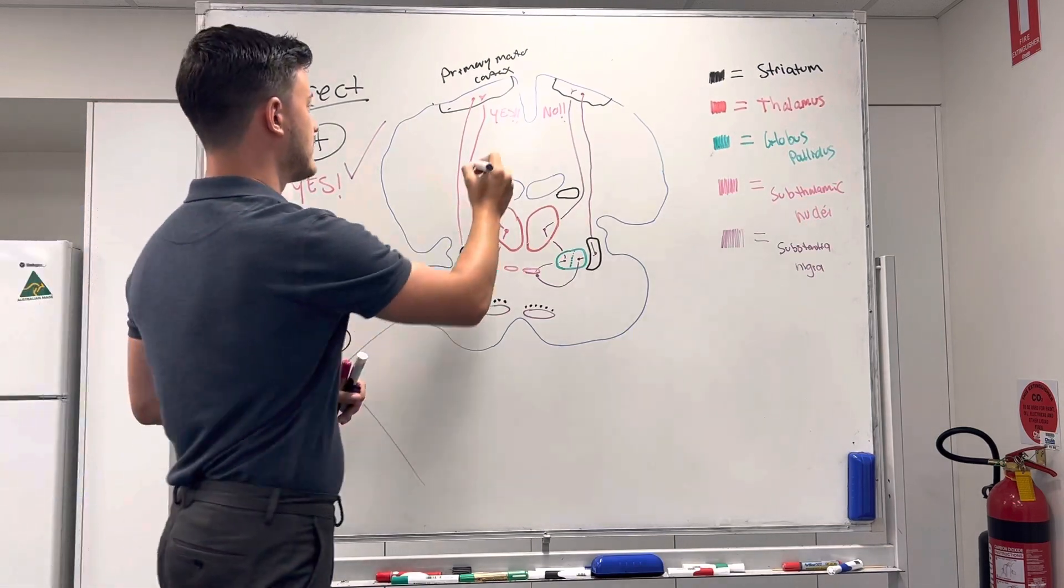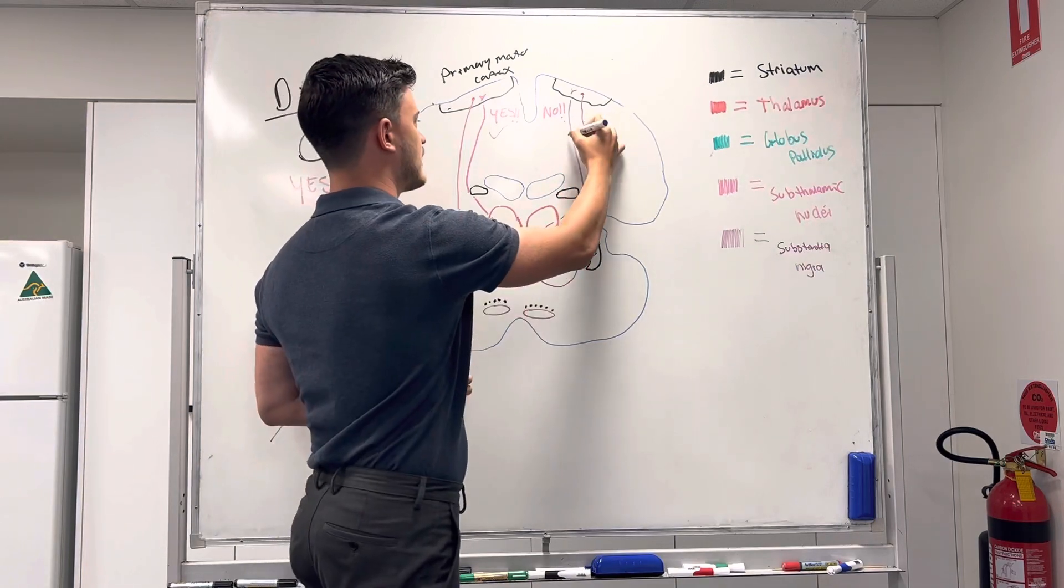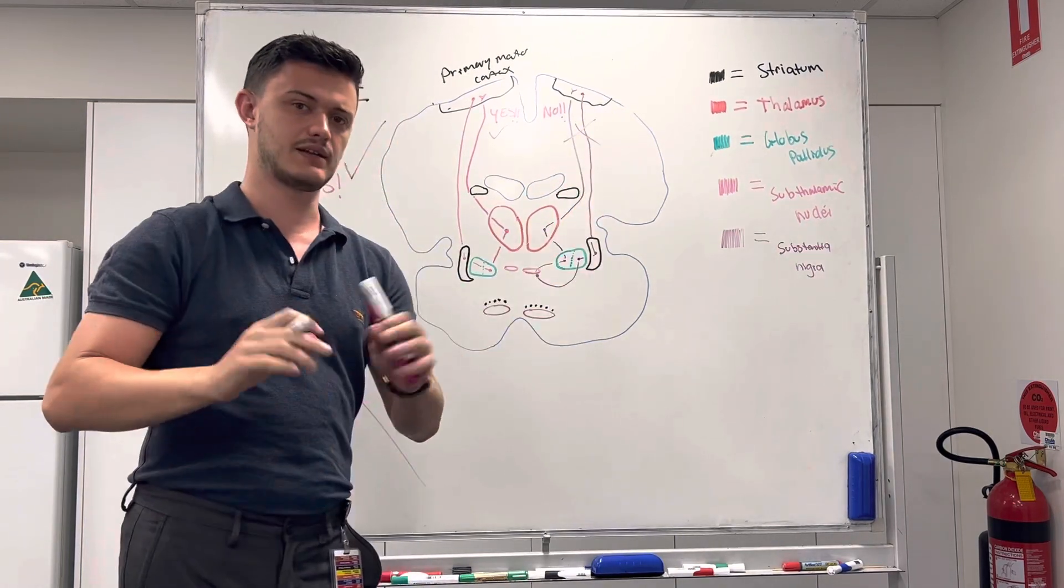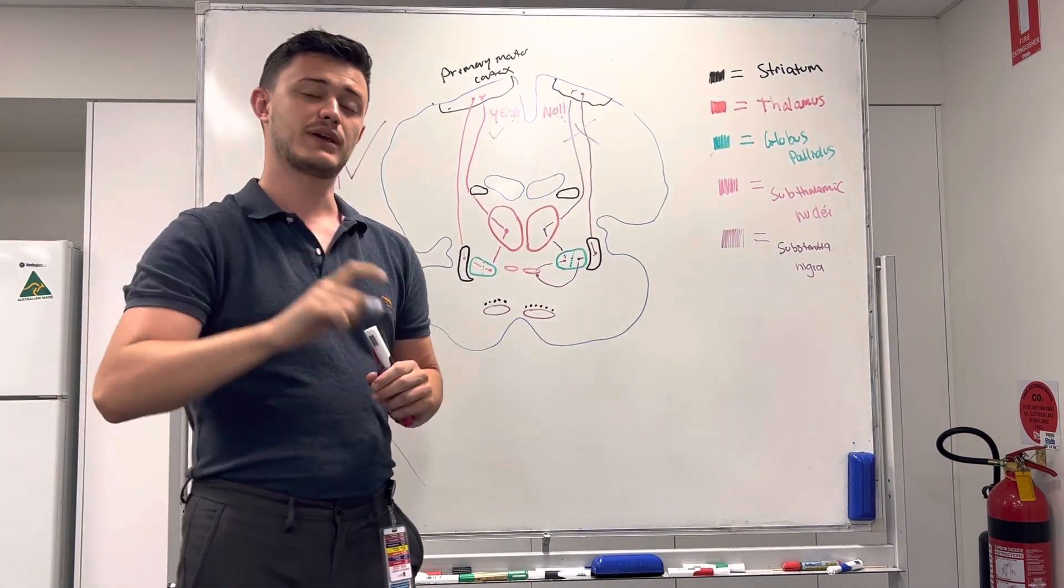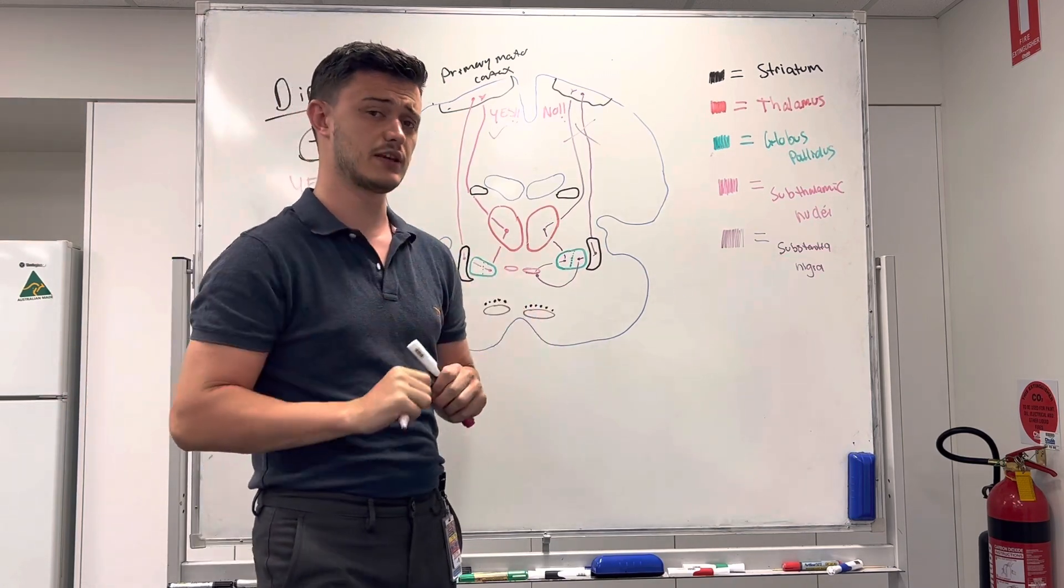So, it's saying no to that pathway, but it's actually saying yes to that pathway. So, that means that we're getting a yes pathway, because it's saying, yes, do that, I like that. But it's saying, no, don't do this pathway. It doesn't like the indirect pathway. So, what we're going to get is the yes pathway. So, yes, I can perform that movement very, very fluidly, which is really, really good.